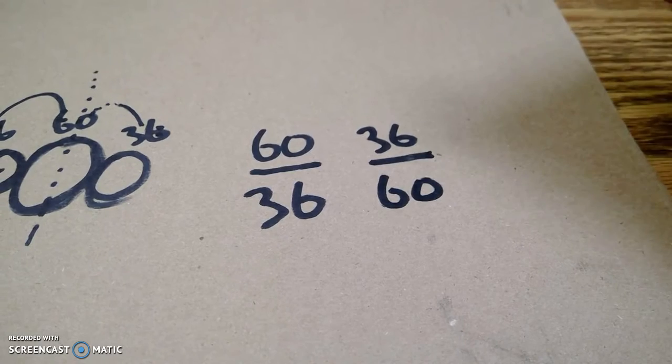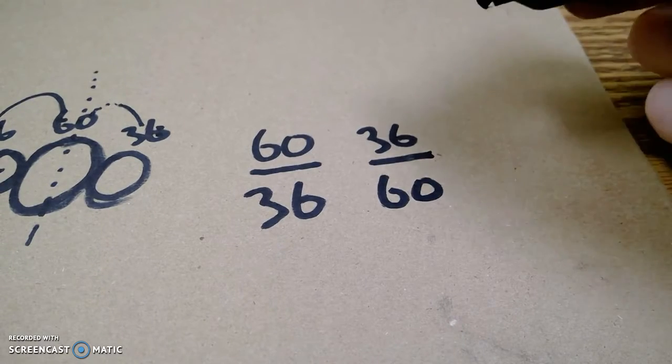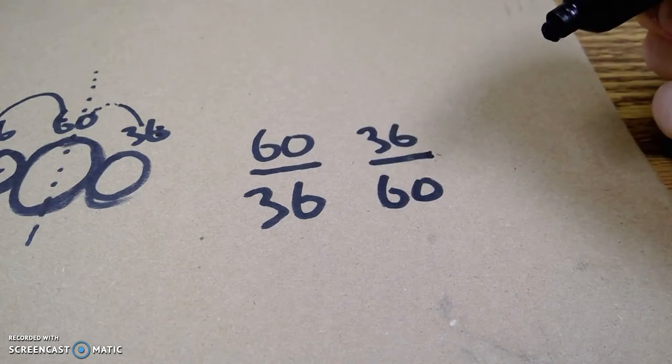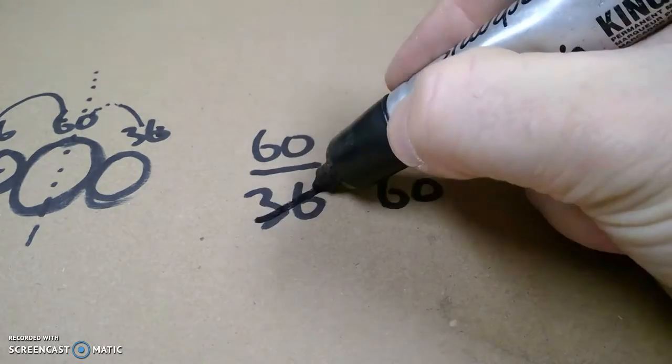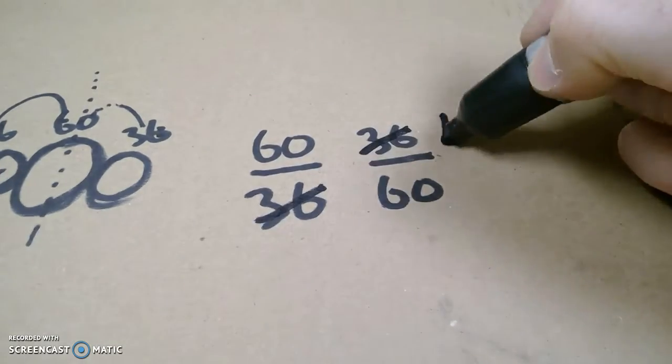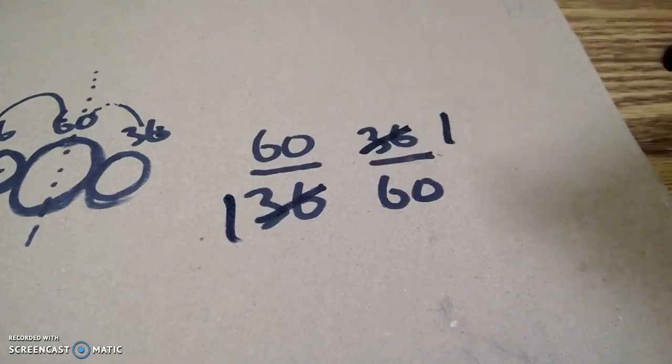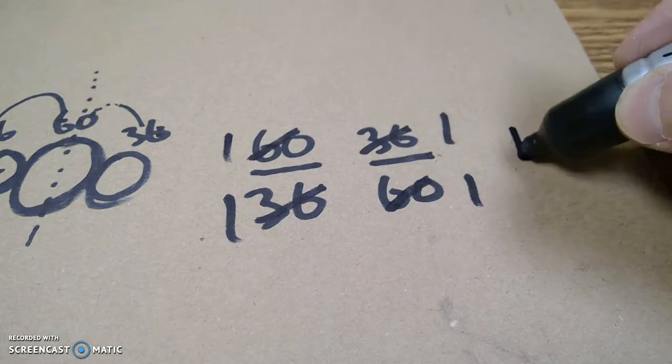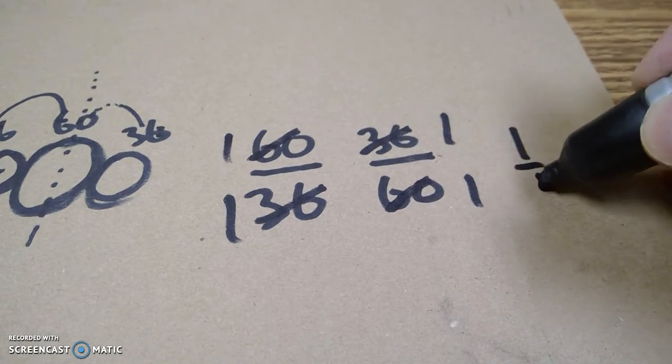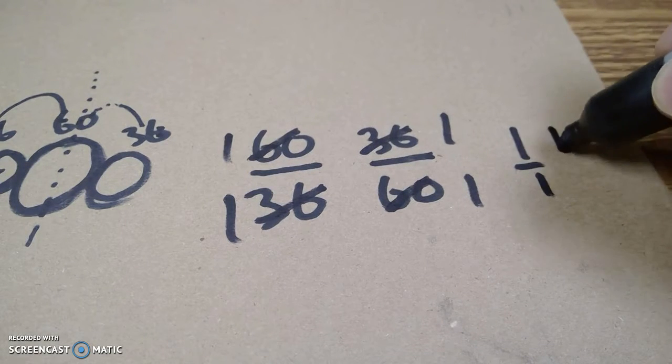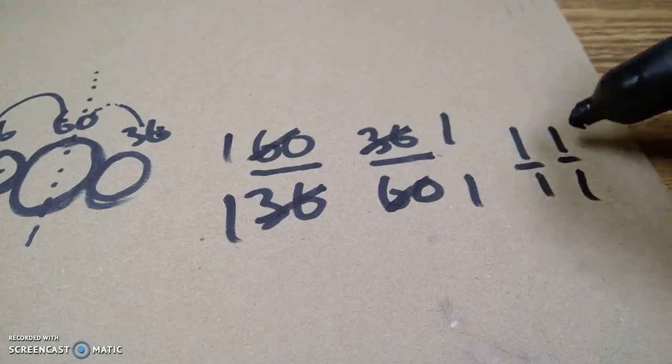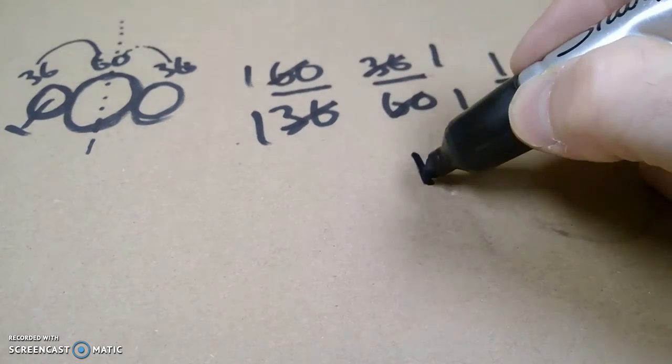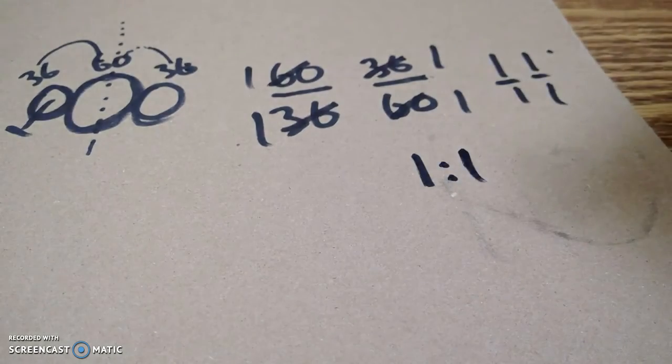Then what would you do in math class to simplify these fractions? Well, 36 goes into 36 one time, and 60 goes into 60 one time. So I'm left with 1 over 1, 1 over 1. This is a 1 to 1 gear ratio.